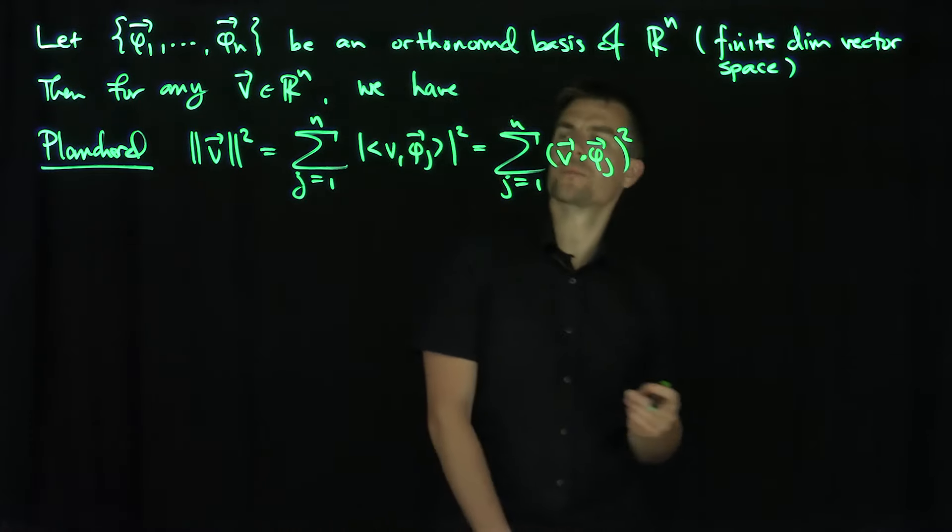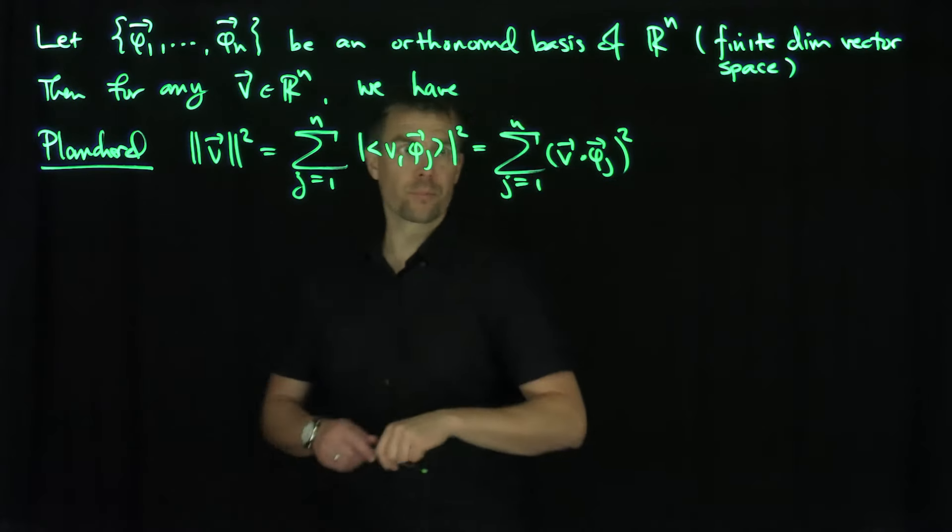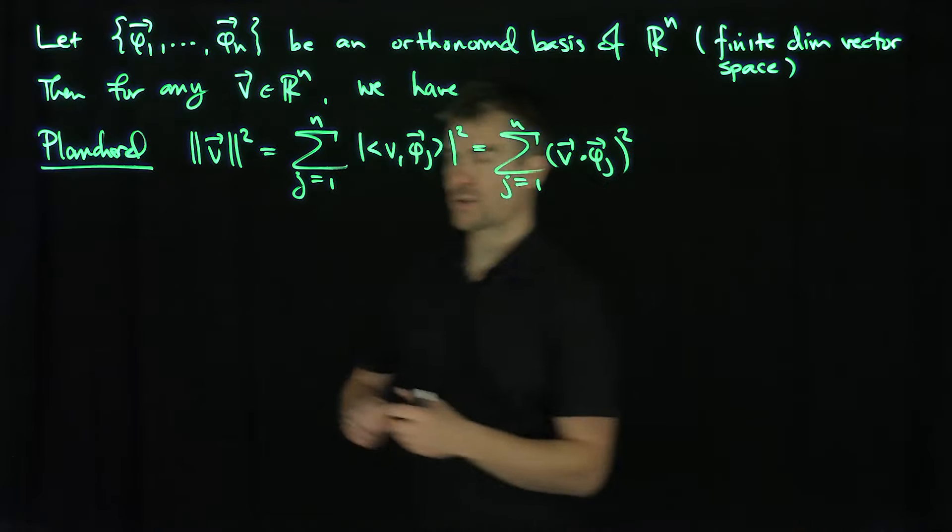That's for an arbitrary vector space. And so how do we prove this? Well, the proof basically follows from the coefficient representation of v. So the proof is simple.